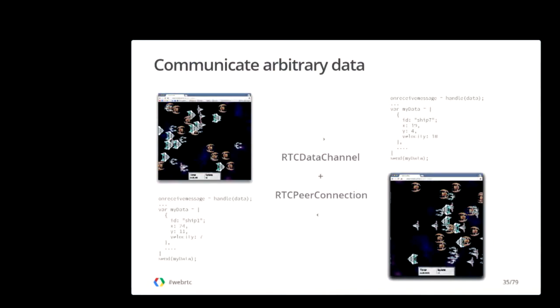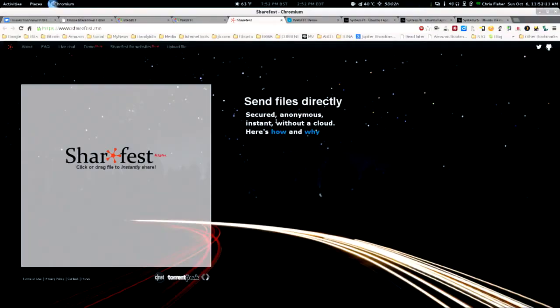RTC Data Channel allows for the peer-to-peer exchange of arbitrary data. Take a game — you've got a space game called Jank Wars, and when Matt and I are playing Jank Wars — Matt's at home and I'm here at my house — he needs to know where my spaceships are, and I need to know where his spaceships are. So you could use this data channel to transmit something like that. You could check out this service called ShareFest — it's a peer-to-peer file exchange service built into the web application.